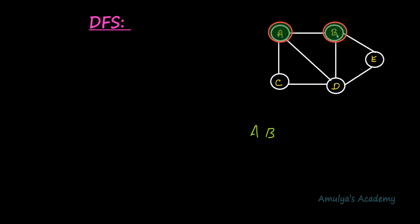Next, visit an unvisited adjacent node of B. B is adjacent to D, E, and A. A is already visited, so D and E are left. Here I will visit E. Next, visit the unvisited adjacent node of E. E is adjacent to B and D; B is already visited, so I will visit D. Now D is also visited. The unvisited adjacent nodes of D are A, B, E, and C; A, B, and E are already visited, so I visit C. Now all nodes are visited and we are done.